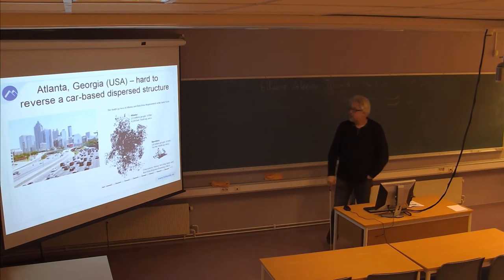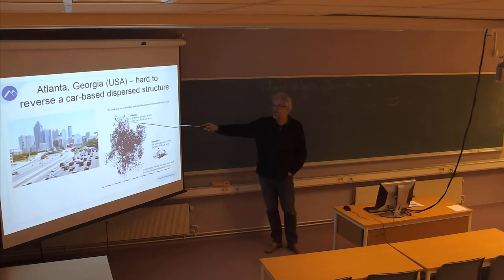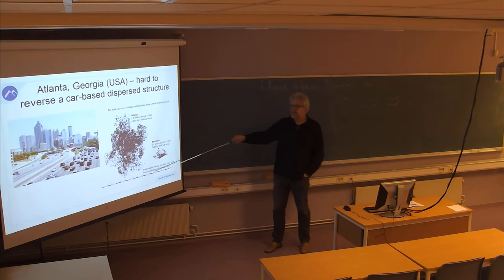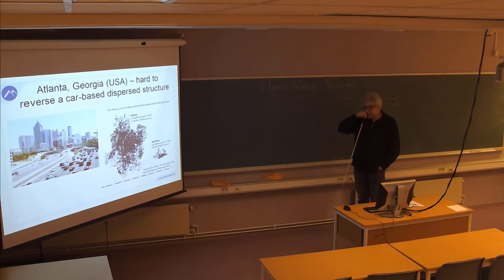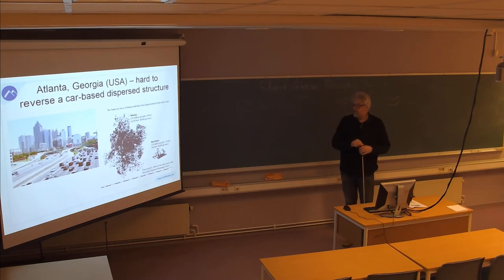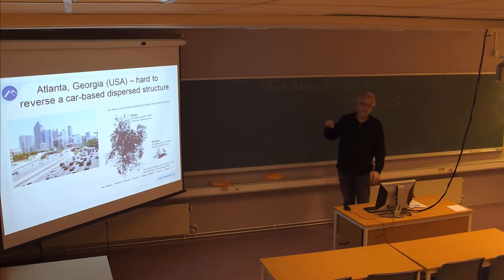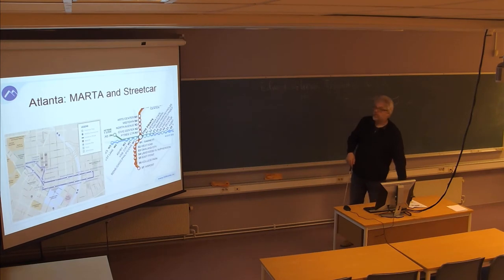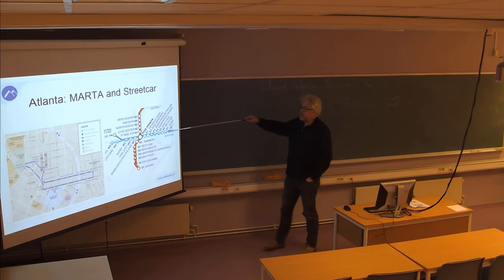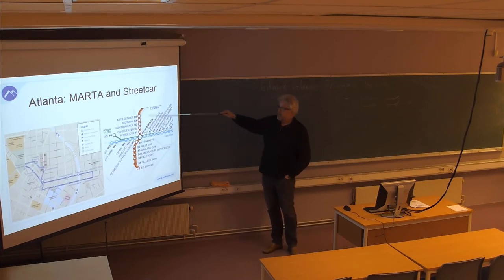The built-up area in Atlanta is approximately 4,300 square kilometers, whereas in Barcelona it is 162 square kilometers, for approximately the same number of people. The difference is substantial. Despite this, they try their best to reverse the high car dependency in Atlanta. Let's have a short look at their subway system.